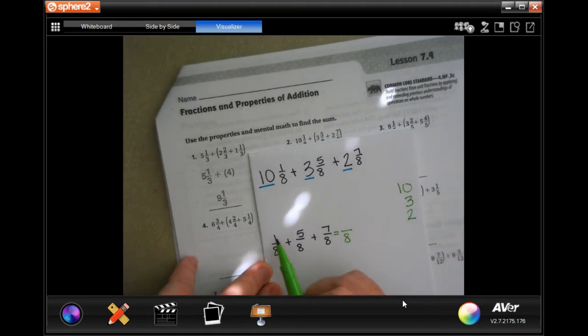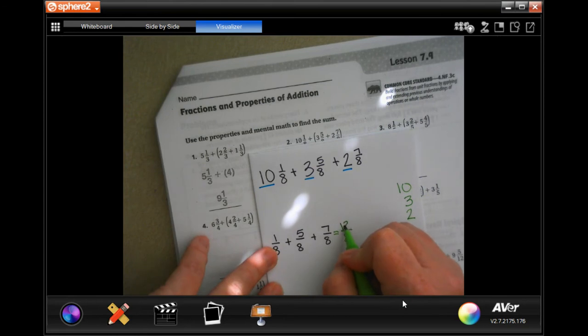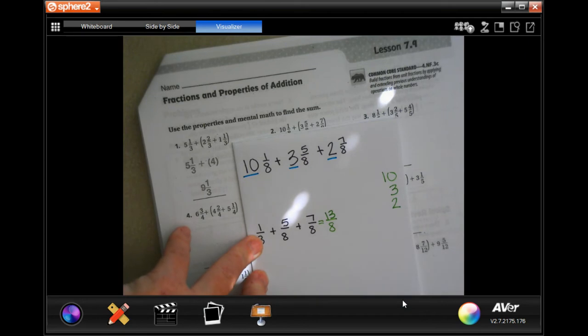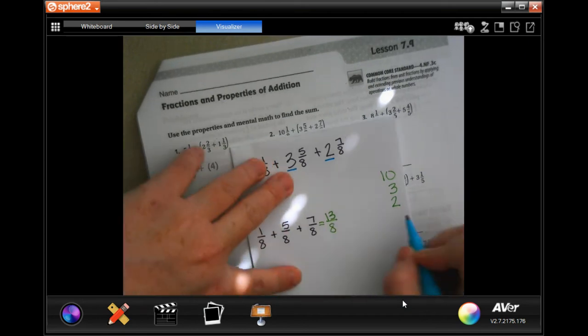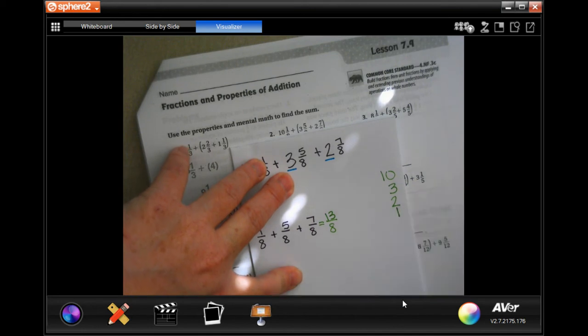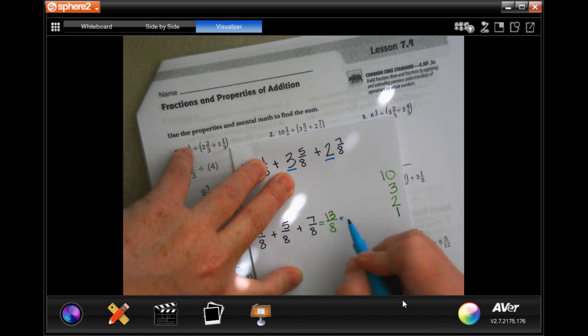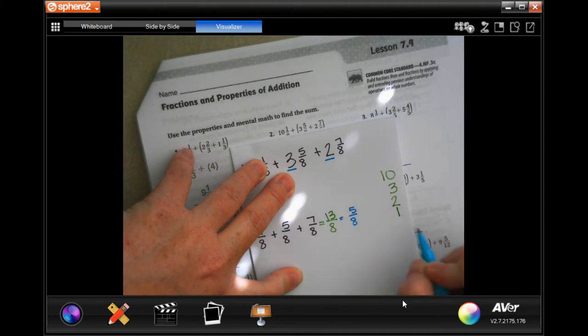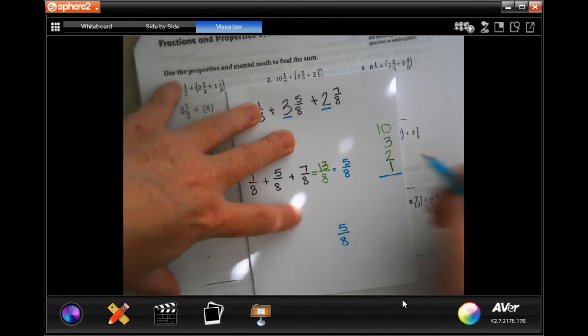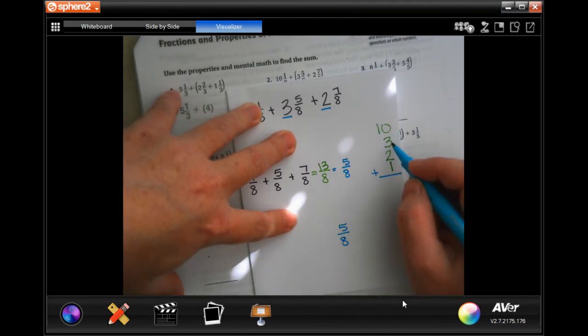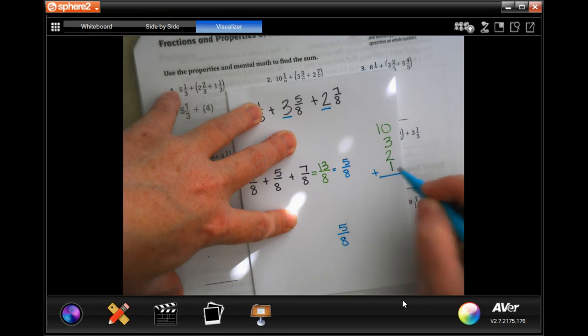My denominator is still going to be eight, but I have one plus five is six, plus seven more is thirteen. Now you'll notice that's an improper fraction because the top is bigger than the bottom. So eight is going to go into thirteen one time, which would be eight, and thirteen minus eight is five. My denominator stays the same, so now my fraction part is five eighths. Then my whole number is 10 plus 3 is 13, plus 2 more is 15, plus 1 more is 16. Sixteen and five eighths.